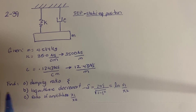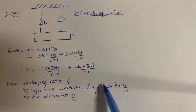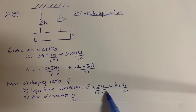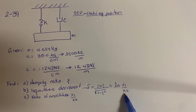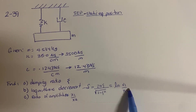The problem is asking us to find the damping ratio. The logarithmic decrement, which is given by this formula, is 2π times the damping ratio over the square root of 1 minus damping ratio squared, which is also equal to the natural logarithm of x1 over x2. The problem also asks us to find the ratio of amplitudes x1 over x2, which we can find from this equation.